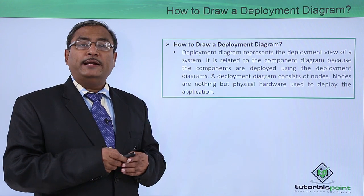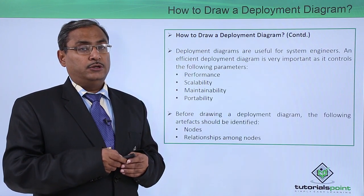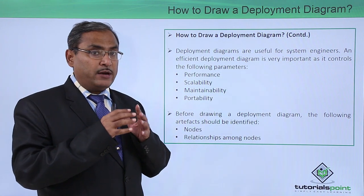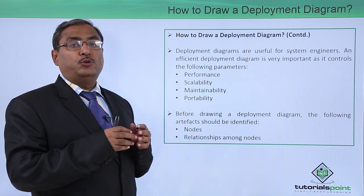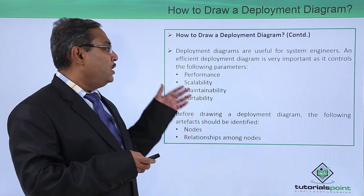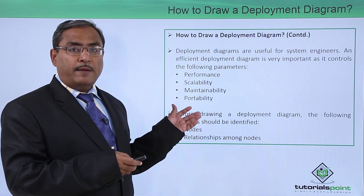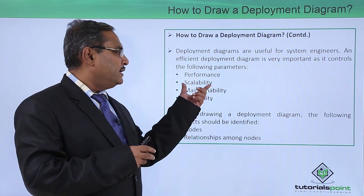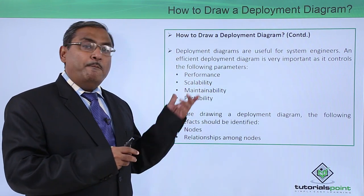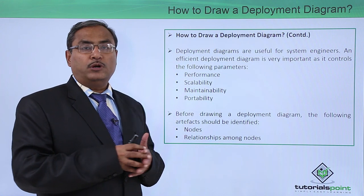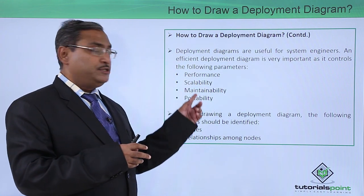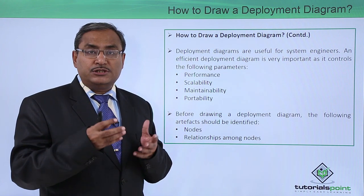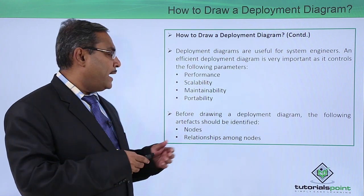Why is this deployment diagram so important? The different factors decided on this deployment diagram include a set of parameters: the performance of the total system, scalability, maintainability, and portability. These are the features which will be obtained and analyzed by going through the deployment diagram.